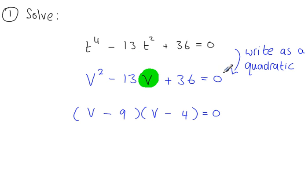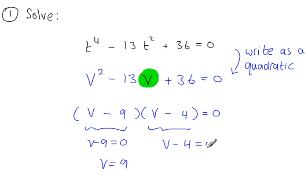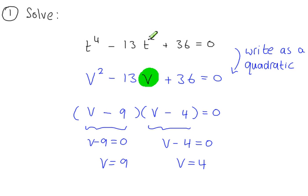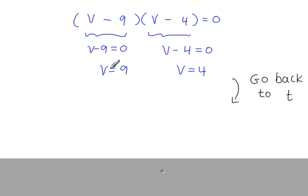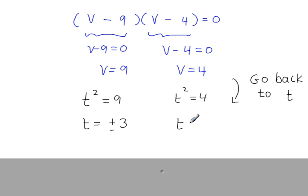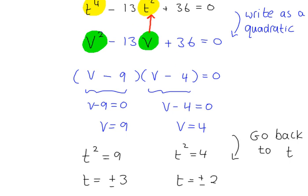This quadratic equation factorises easily. From one factor we have v minus 9 equals 0, so v equals 9. From the other factor we have v minus 4 equals 0, so v equals 4. Now the original equation is in terms of t, not v, so we have to undo the substitution. To undo the substitution, I'm going to replace v with t squared.